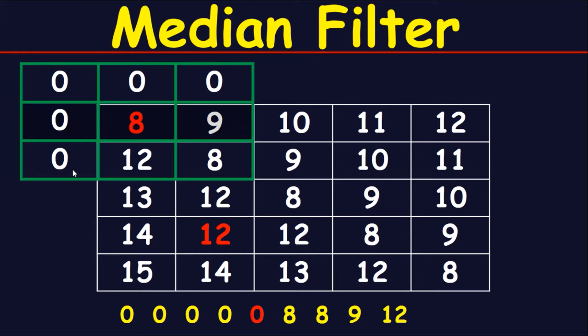So what you have to do is simply you should put in these cells zeros like this. Then sort the numbers in the mask ascendingly or descendingly. I will sort it ascendingly. So I will put the 5 zeros, these 5 zeros, then 8 and 8, 8 and 8, 9, 9, then 12 like this.